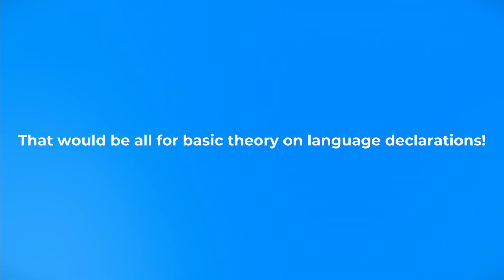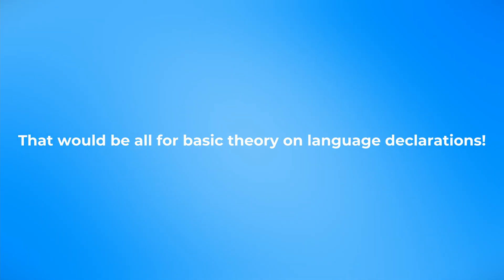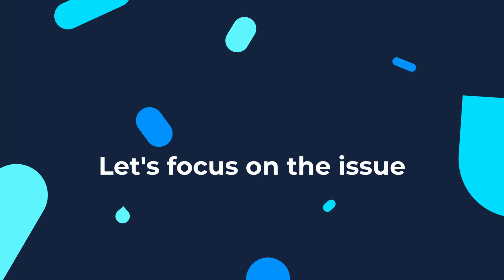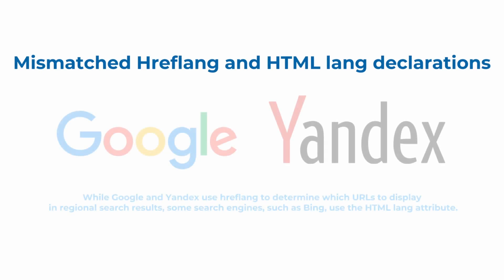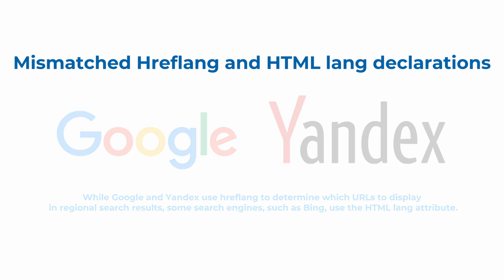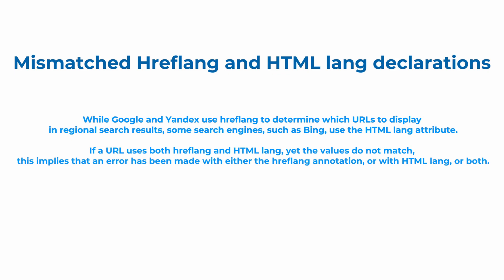Now you're all caught up on the basic theory about hreflang and HTML language declarations. While search engines like Google and Yandex use hreflang to determine which URLs to display in regional search results, some search engines such as Bing use the HTML-lang attribute. If a page uses both hreflang and HTML-lang yet the values do not match, this implies that an error has been made with either the hreflang annotation or with HTML-lang, or both. This may result in the incorrect page being served in a localized search result.